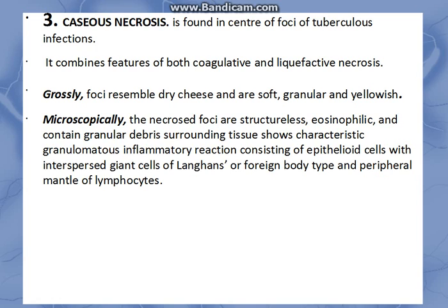In tuberculosis, there is granuloma formation. A granuloma has a center of necrosis — dead tissue, mostly of the caseous variety — further surrounded by epithelioid cells interspersed with giant cells of Langhans or foreign body type variety. These are further surrounded by lymphocytes, which are further surrounded by fibroblasts. This is a typical granuloma.